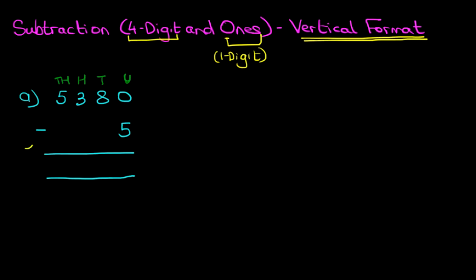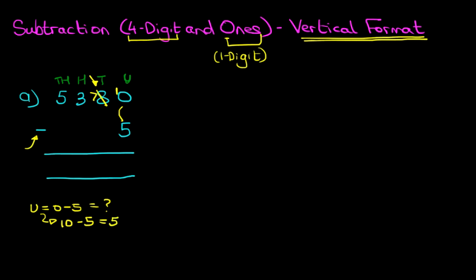We're ready to do the subtraction. Always check the sign. And as always, we start on the right-hand side first. Units: 0 minus 5 is something we cannot do. So we're going to take one of the tens from here. We're going to cross out the 8. 8 minus 1 is 7. And the one we have taken from there, we're going to move it across to the units column. So the units column has now become 10 minus 5. And we know this from our number bonds — 10 minus 5 is 5.